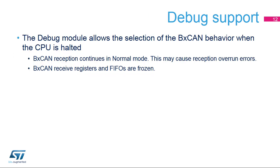The debug support module allows the user to select the BX CAN behavior when the core is halted — in other words, stopped at a breakpoint. The default configuration allows the BX CAN reception to continue as normal, and this may lead to reception overrun errors. The other debug option is to block updates of the BX CAN receive registers and FIFOs until the core is running.